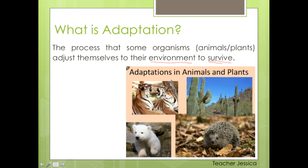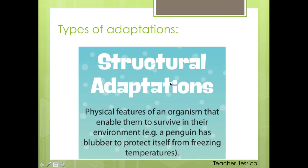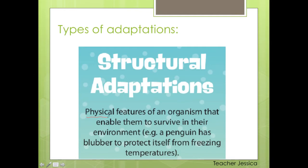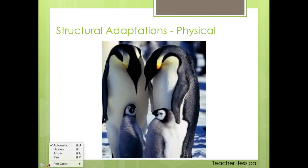The first thing you need to know about adaptation is we have two different kinds. The first one is called structural adaptation. This is all related to the physical features of an animal or plant that enable them to survive in their environment. The example we have here is the penguin. Penguin has blubber to protect itself from the freezing temperatures. Blubber means fat — the fat under the skin protects them from the freezing environment they live in. Even the baby already has blubber.